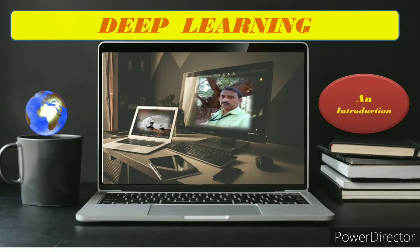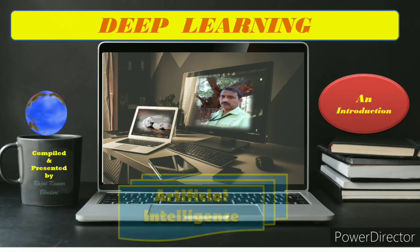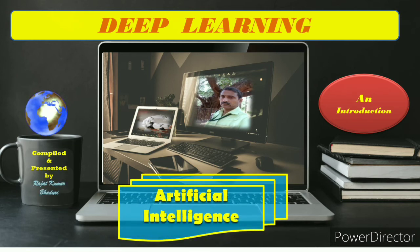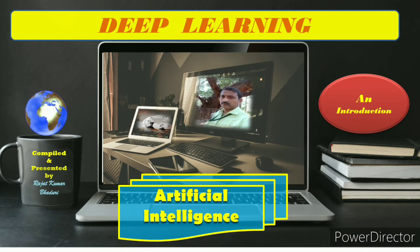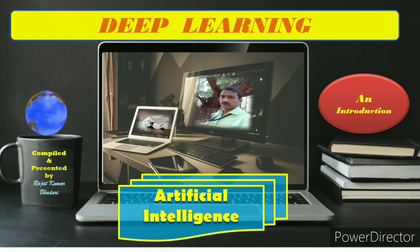Hello everyone. Today we have chosen the topic which I think is the very second most important topic in artificial intelligence — that is deep learning. When we deal with deep learning, you cannot segregate deep learning, machine learning, and artificial intelligence separately; each is connected with the other. But today we have specifically chosen deep learning because it is one of the very core components of artificial intelligence. Let's start at a very introductory step and go for it.